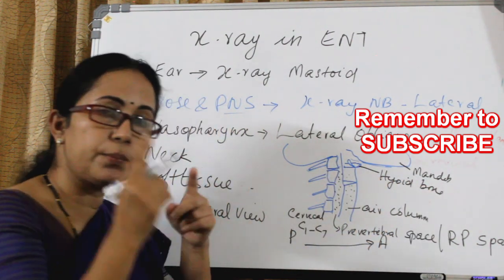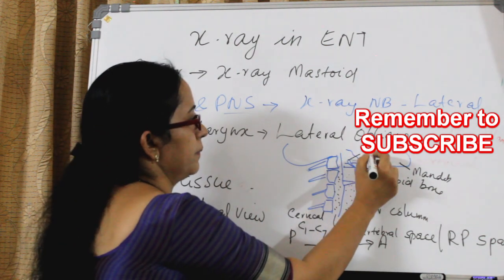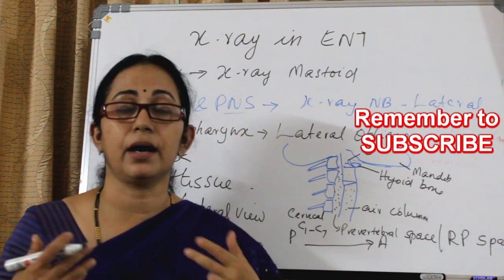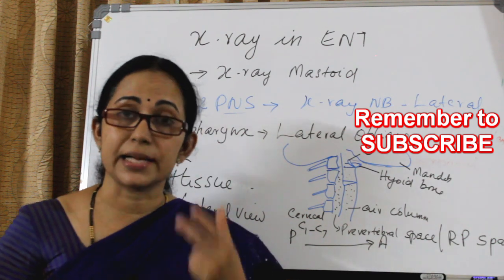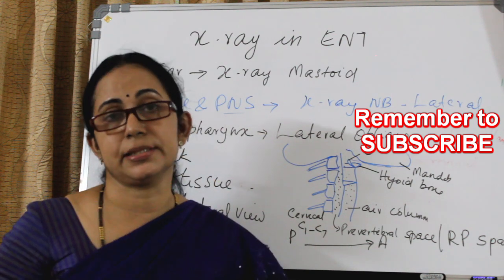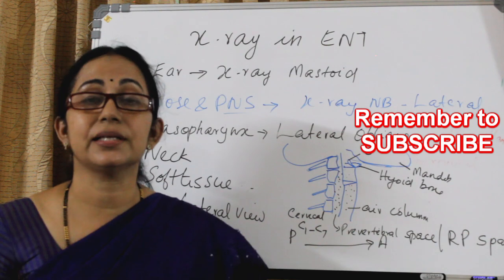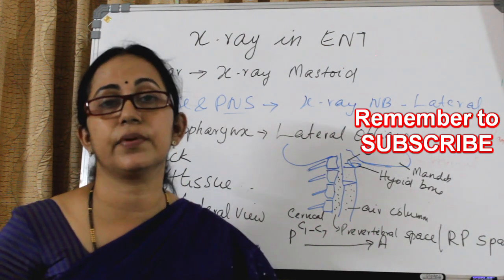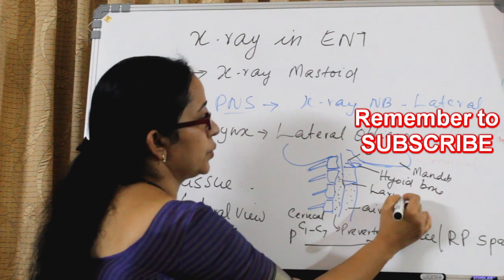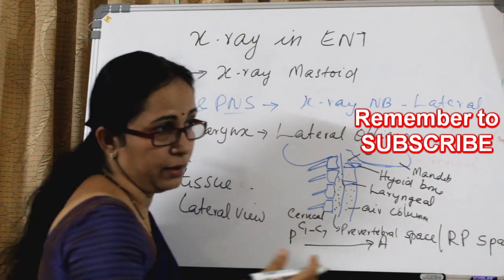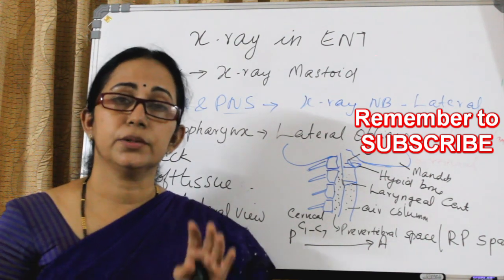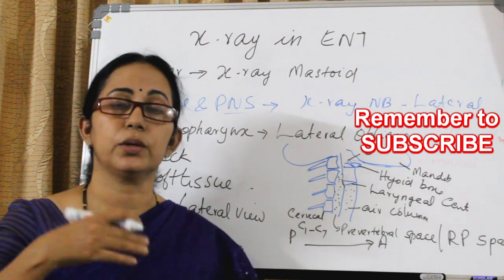Just below the mandible, an important landmark is the hyoid bone. In between the hyoid bone comes the epiglottis. This is the larynx and cartilage. When age advances, there will be calcification of the laryngeal cartilages, seen as dense opacities — this is normal. Always remember to look at the normal anatomical landmarks first, and from the normal go to the abnormal.